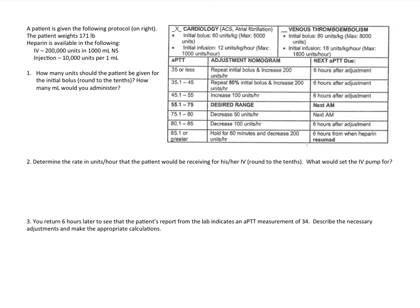For both of these protocols, there is an initial bolus — we give the patient an initial injection of heparin, then hook them up to an IV pump to administer the heparin. We know heparin is an anticoagulant, so it stops the blood from clotting. After a period of time, we test the patient's blood to see how fast it's clotting.